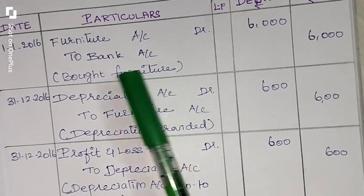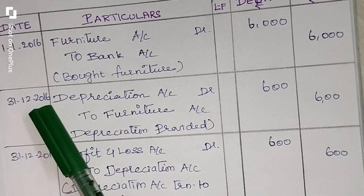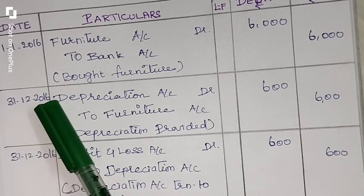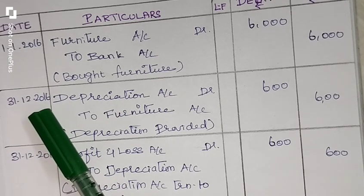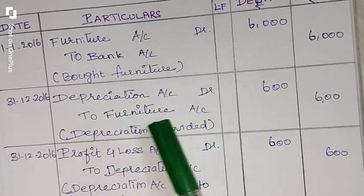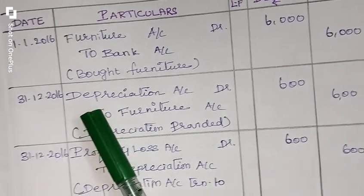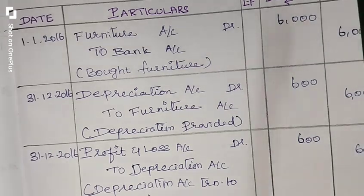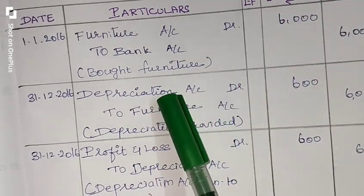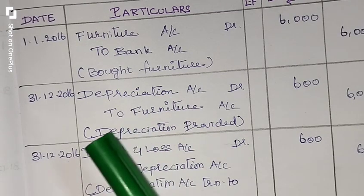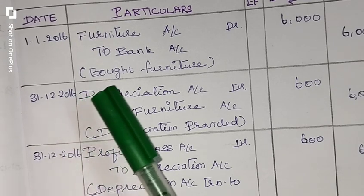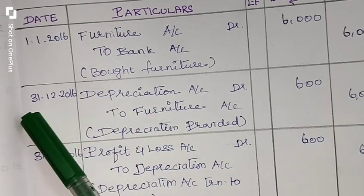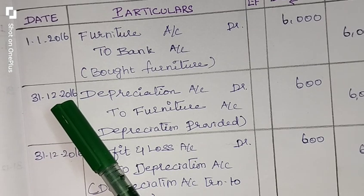What is the closing accounting period? 31st December every year. So we take 2016 as the purchasing year — the purchased period. The journal entry for depreciation: Depreciation Account debit to Furniture Account. Listen here carefully — we have to provide the depreciation at the end of the accounting period, which is 31st December every year.